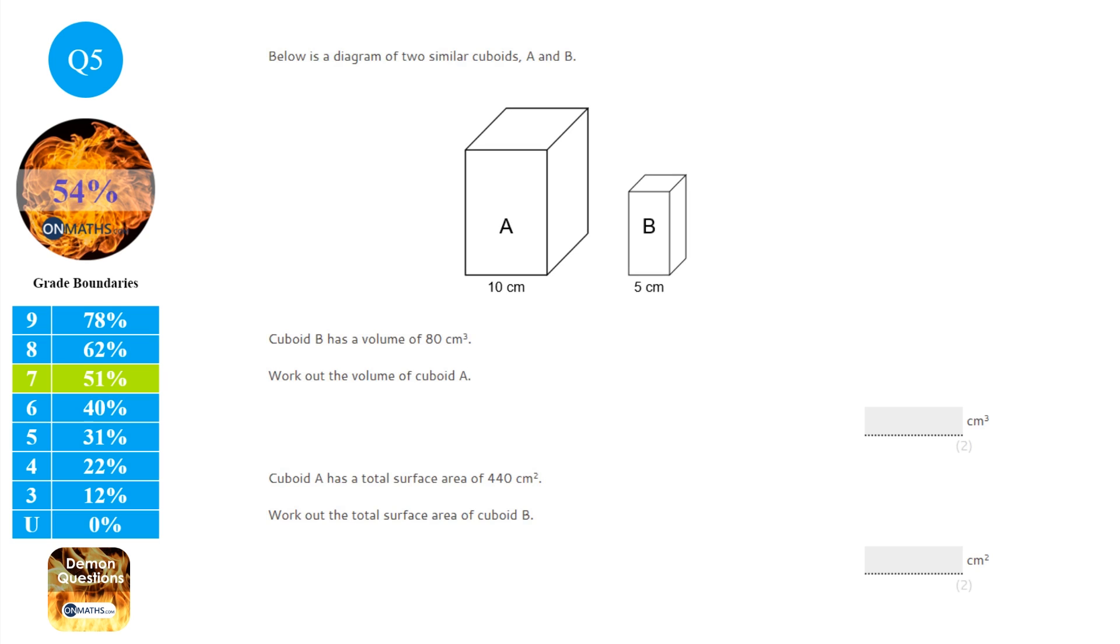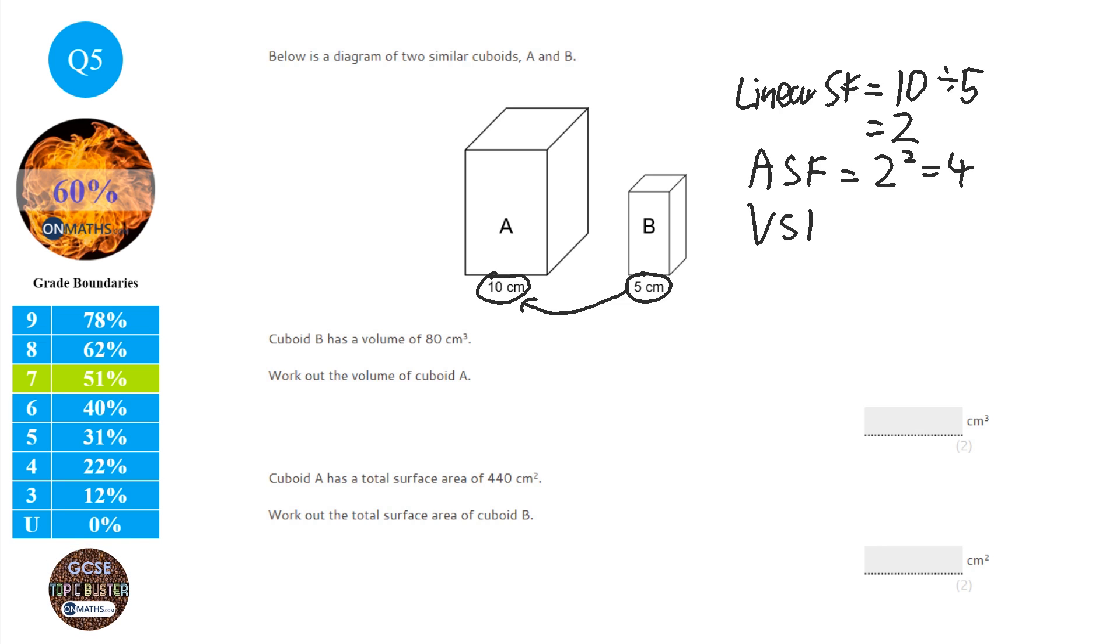So for this question this is all about linear, area and volume scale factor. So with this question from B to A we can work out the linear scale factor. So what do I times 5 by to get to 10? So the linear scale factor is going to be big divided by small which is 2. Now the area scale factor is always the square of the linear scale factor. So we square it and it's going to be 4. The volume scale factor is always the cube of the linear scale factor. So we cube the linear scale factor and it's 8.